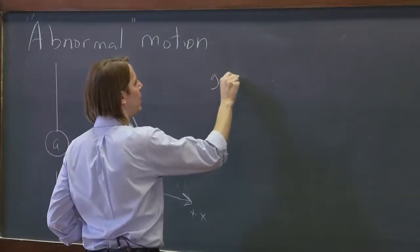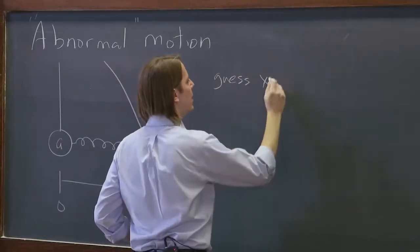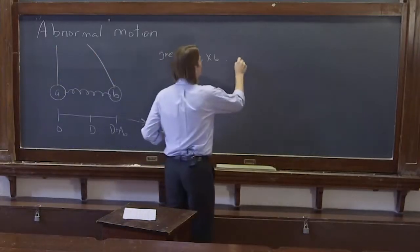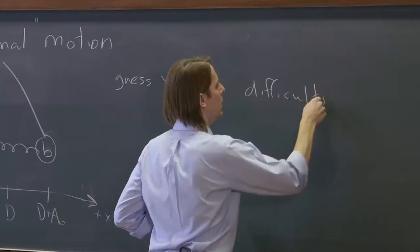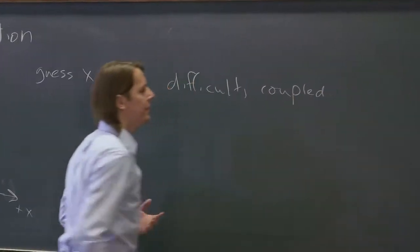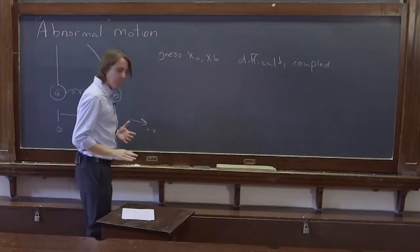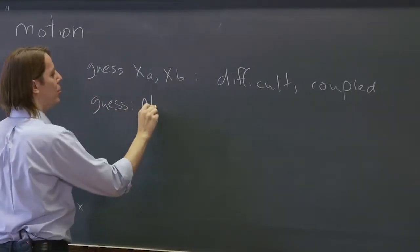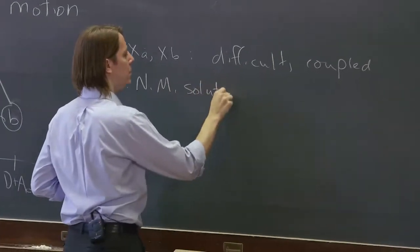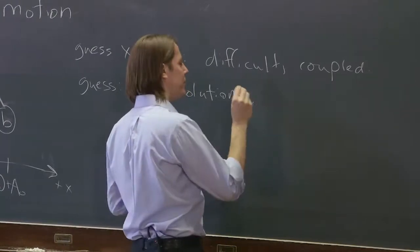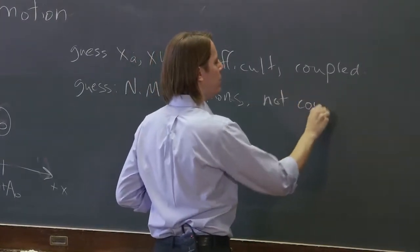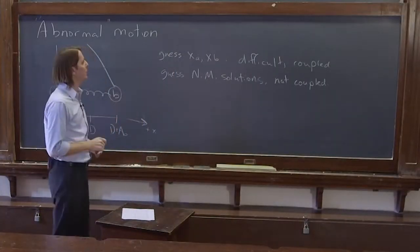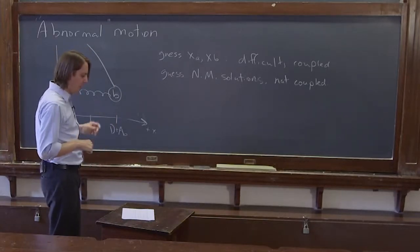Well, we could try to guess directly xA and xB. But the reason we did normal modes is because that's difficult. That is difficult and coupled. The reason we did the normal modes is because they are not coupled. We could also guess normal mode solutions because they are, well, I don't want to say they're easy, but they are not coupled. You can think of those two normal mode motions as independent of each other. They're the two fundamental motions of the objects when they are coupled.